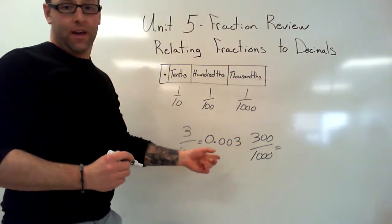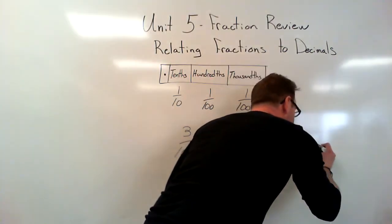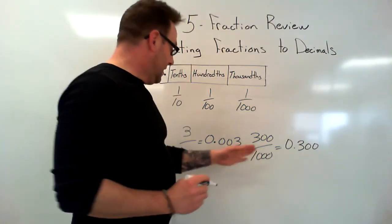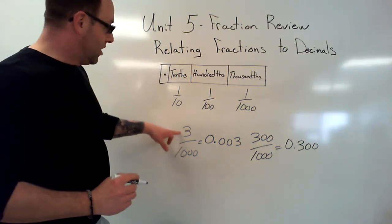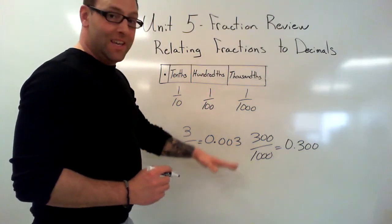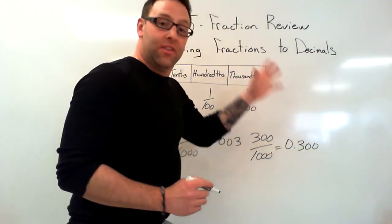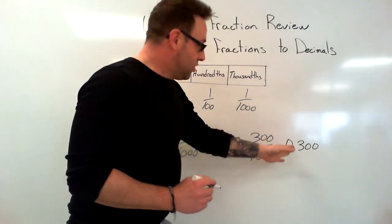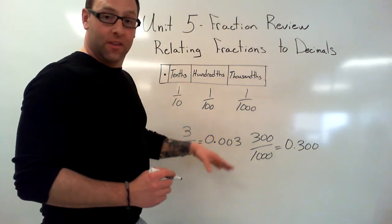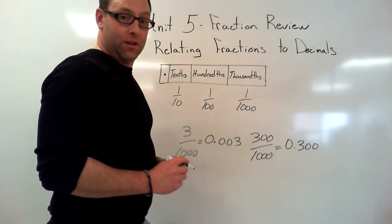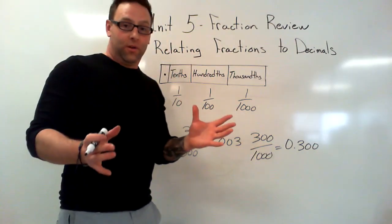If, for example, I had 300 over 1000, now again I'm going to have three place values, but it looks similar but it's very different. We need to understand that the 3 is still just a 3, but it's in that place value, thousands place value. Now over here I've got 300 thousandths. So that 3 with these two zeros is very different than that 3 with these three zeros or two zeros here. So there you have it, that's how fractions and decimals are related.